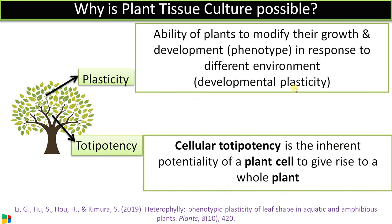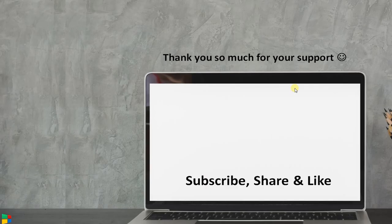This process is called totipotency. Cellular totipotency is the inherent capacity of a plant cell to give rise to a complete plant. These two qualities — plasticity and totipotency — make plants the masters in the battle of survival compared to animals. Hope you understand the concept. Thank you so much for your support.